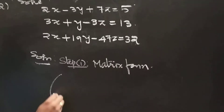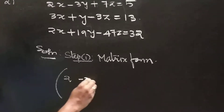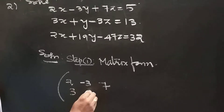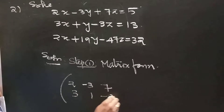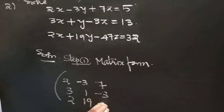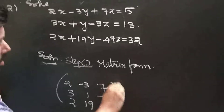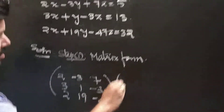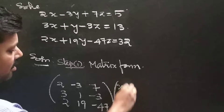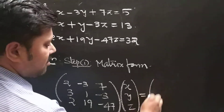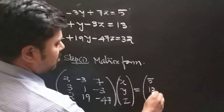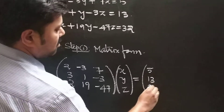Write down the coefficients: the matrix A is [2, -3, 7; 3, 1, -3; 2, 19, -47], and the unknown variables are x, y, z. b is the right-hand side of the given equations: 5, 13, 32.